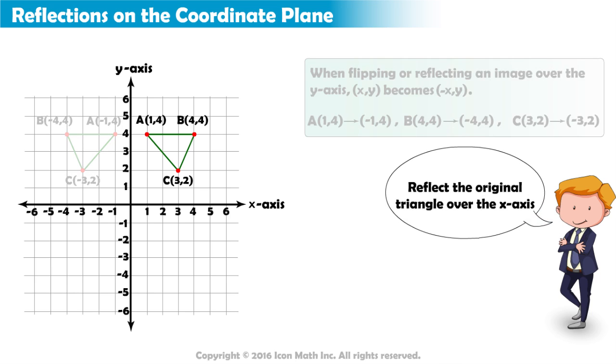Let's now reflect our original image over the x-axis. Again, point A(1,4) must be the same distance away from the x-axis as the reflected point. Since point A is four places above the x-axis, we must plot the reflected point four places below the x-axis. The new point is 1, negative 4.